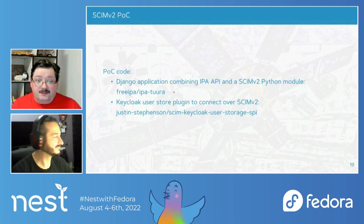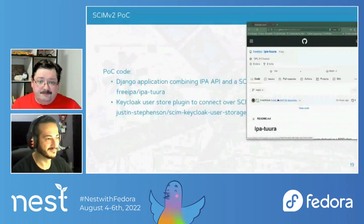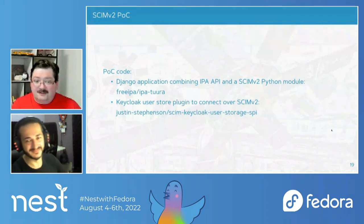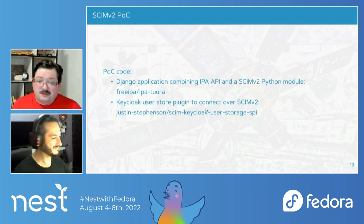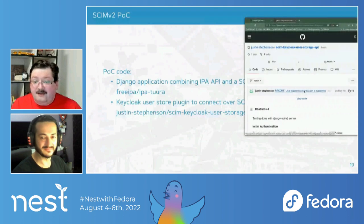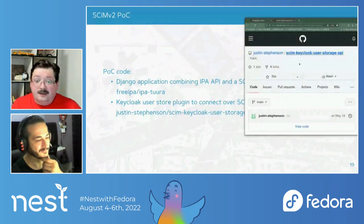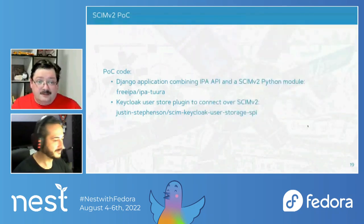The project IPA Tura is published today at freeipa/ipa-tura on GitHub. The name Tura is an ice chisel in Finnish - a tool for making access to water in winter, effectively making a bridge between the web and classical systems. For connecting this to Keycloak there is a Keycloak user storage plugin by Justin Stevenson. It's working and a proof of concept, but obviously needs more work to be production ready.